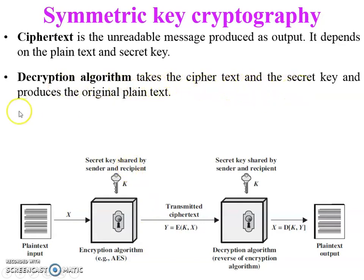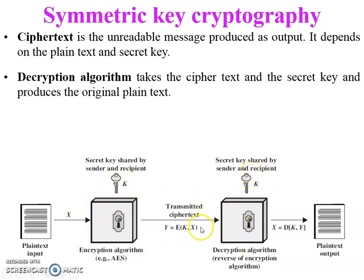The fourth element is ciphertext — the unreadable message produced as output. It depends on the plain text and the secret key. The input of the encryption algorithm is plain text and a secret key, and the output is ciphertext, which is then transmitted to the receiver side through a secure channel.